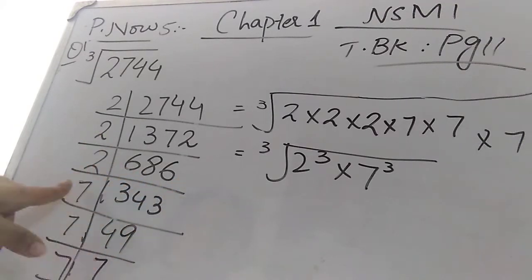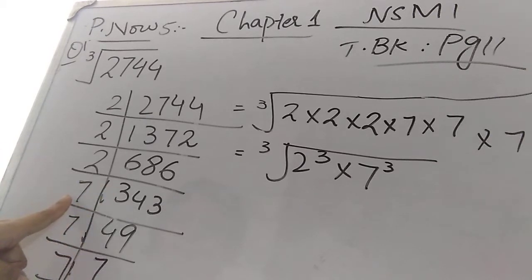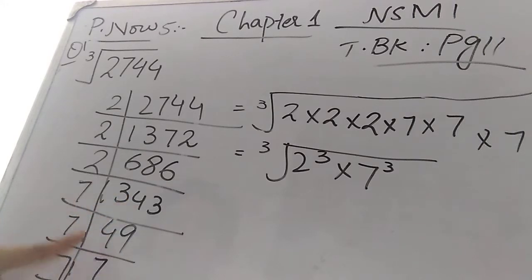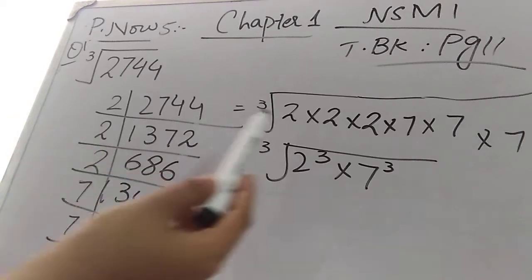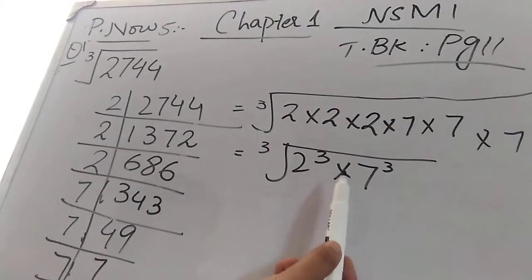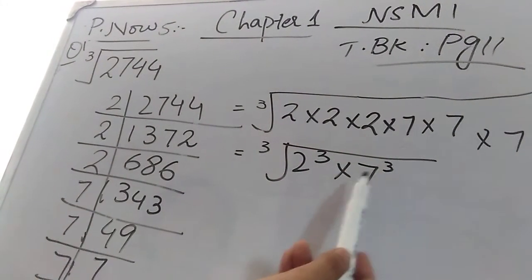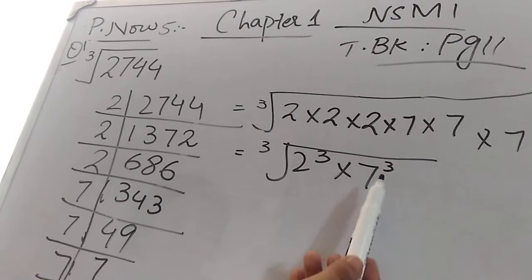343 is divisible by 7. You can use a calculator to check. So 7 × 7 = 49, and 7 × 49 = 343. The prime factors are 2, 2, 2, 7, 7, and 7. Written in index notation: there are three 2s, so 2 power 3, and three 7s, so 7 power 3.